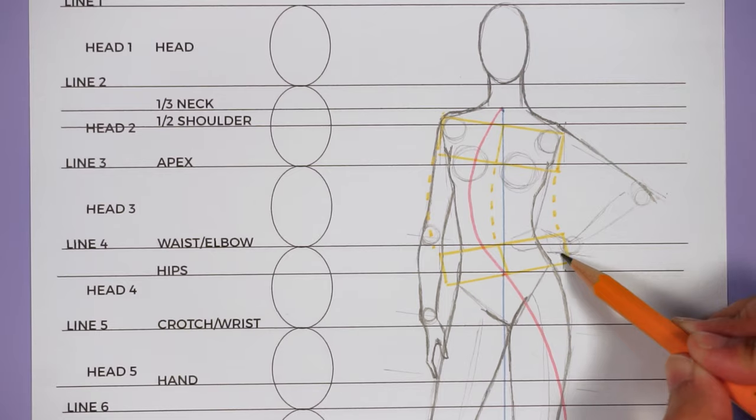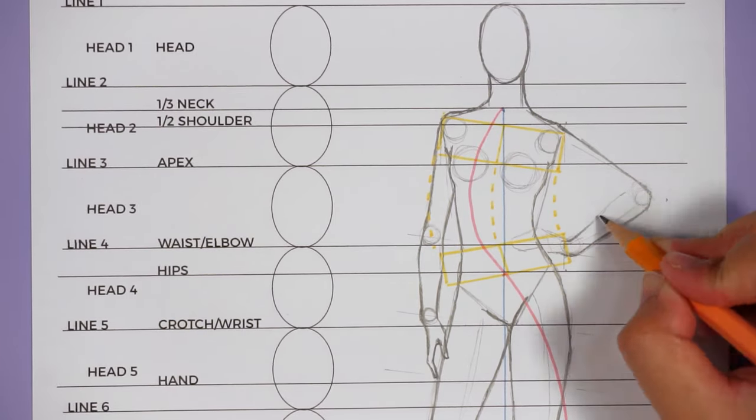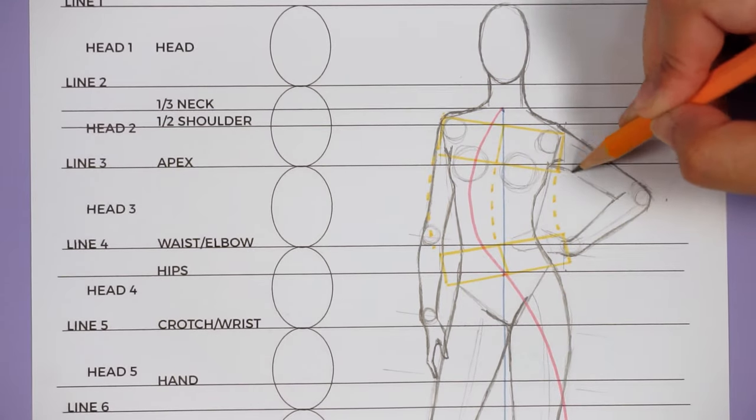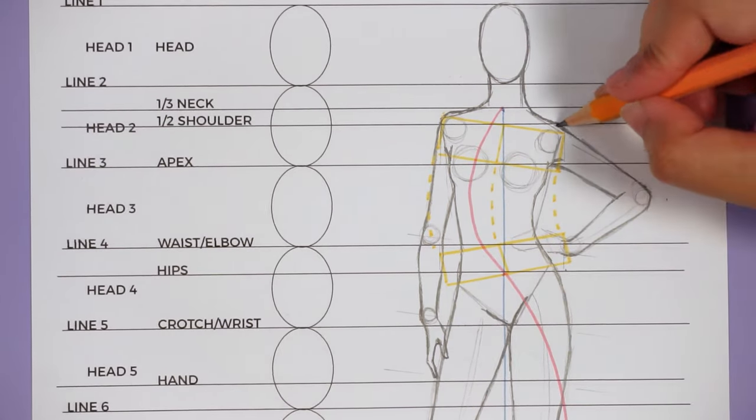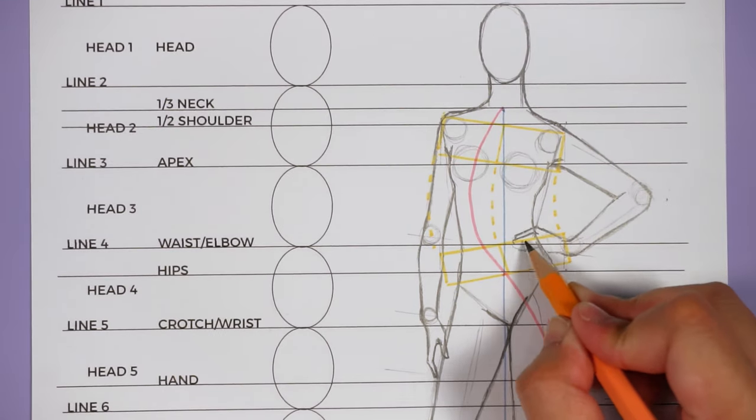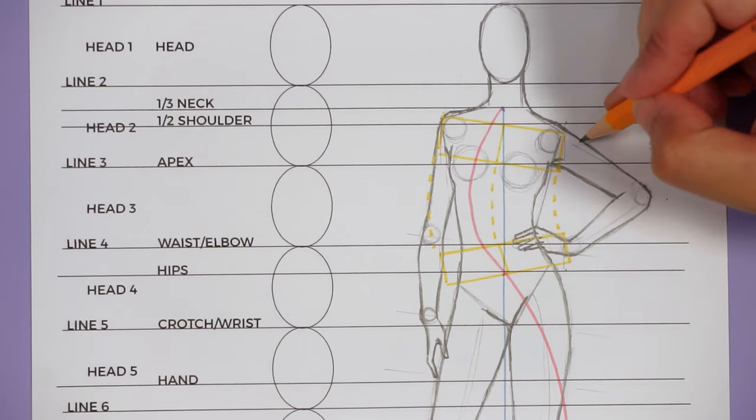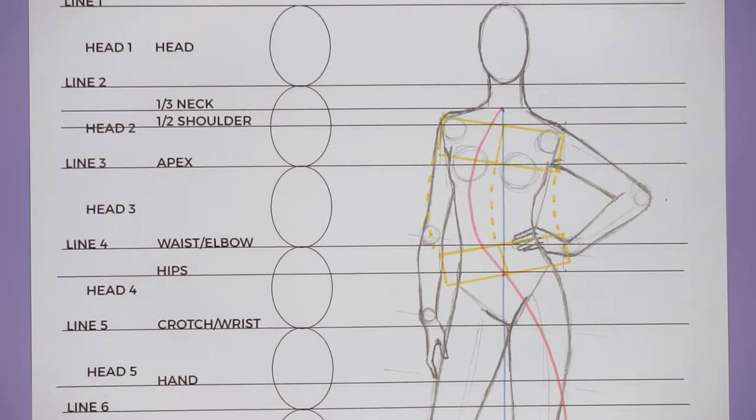All you gotta do is draw the circles for the joints, connect that elbow to the wrist, which falls on the waist, and then draw the hands. And if you actually want a detailed tutorial on how to draw hands, I do have a video on that in my channel. So I will also link that in the description box down below.